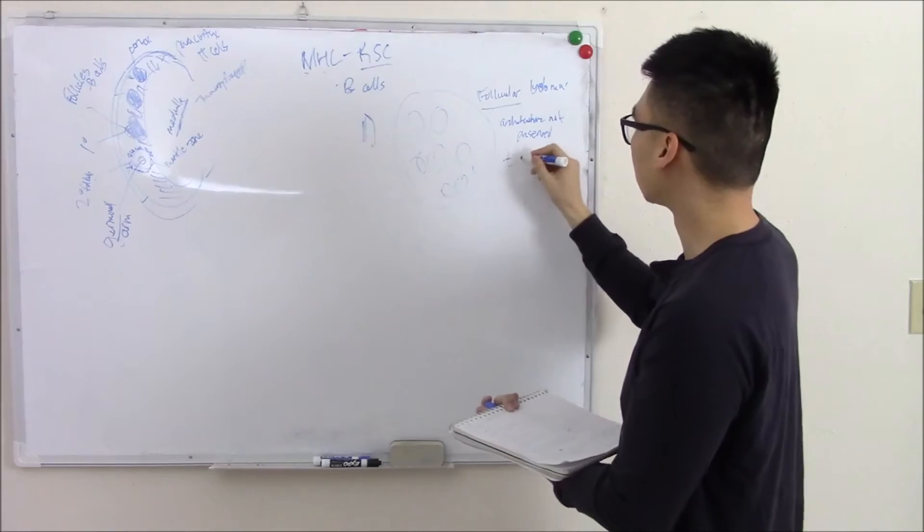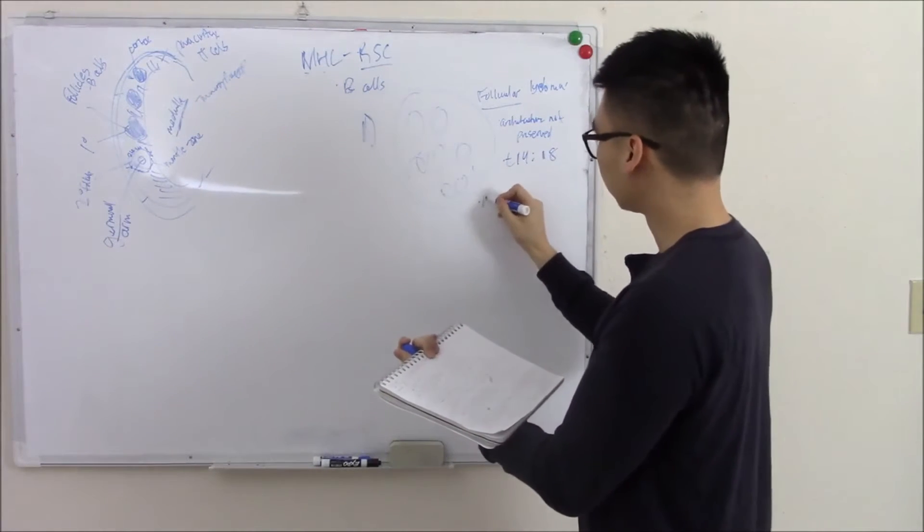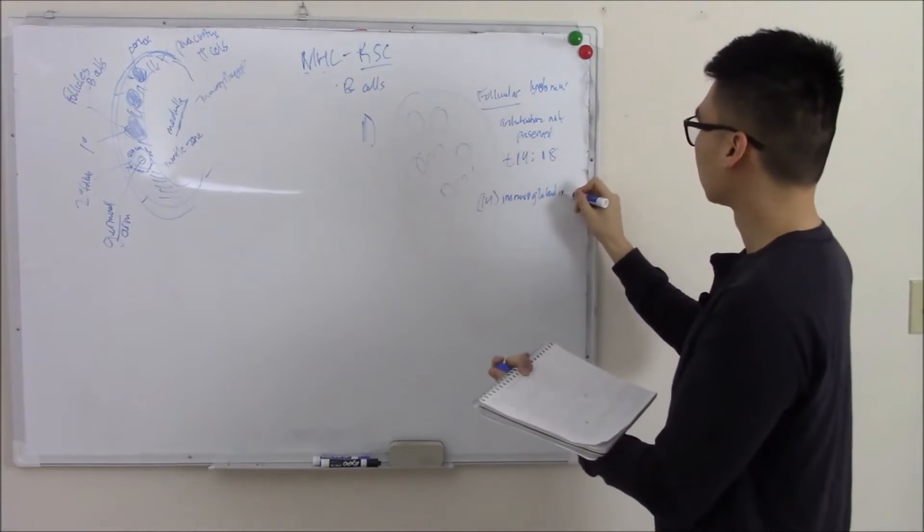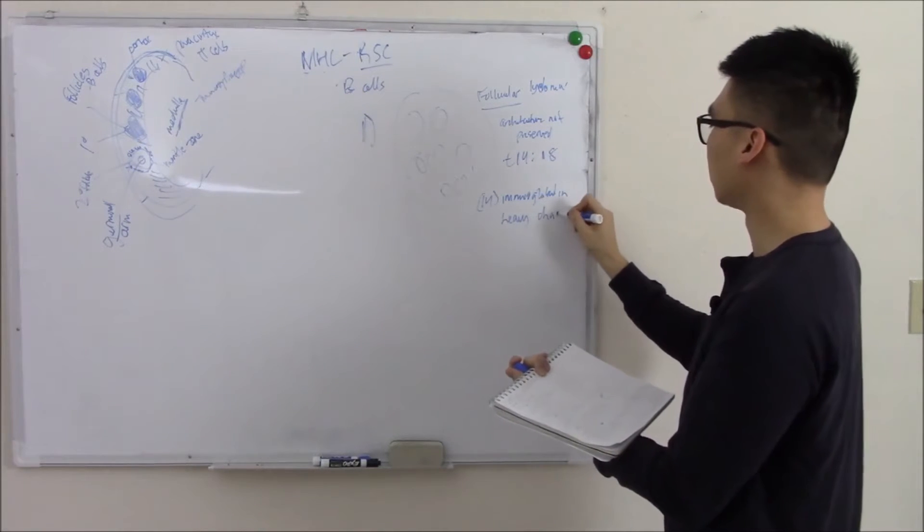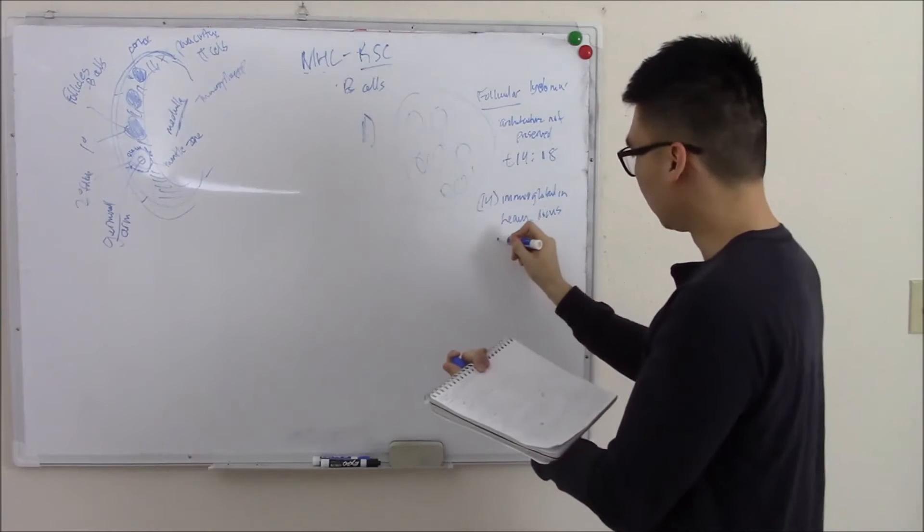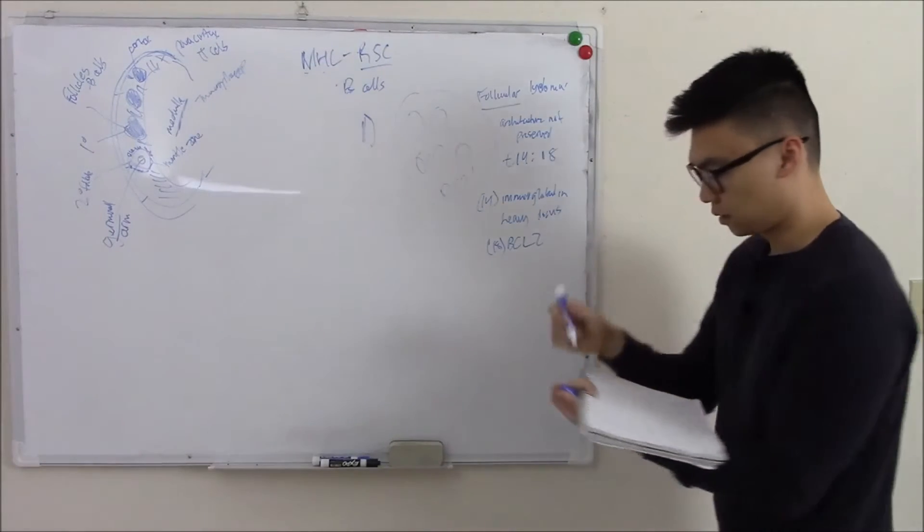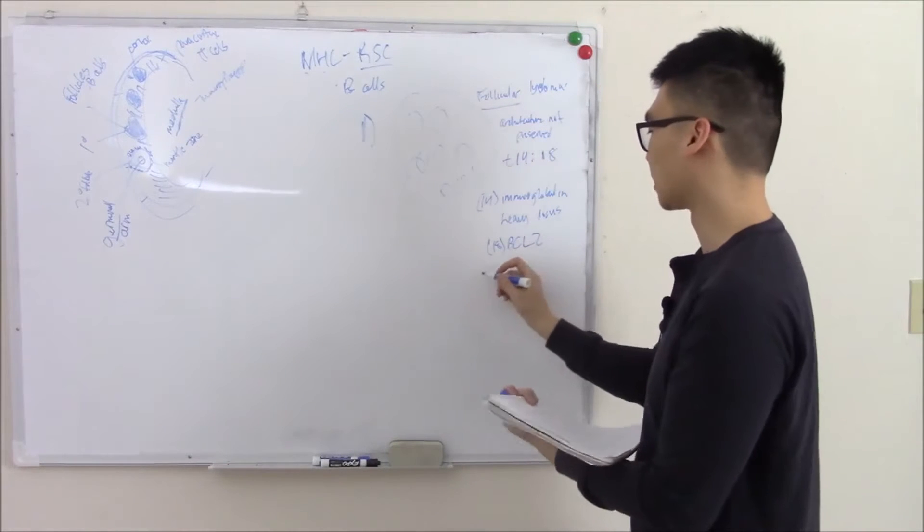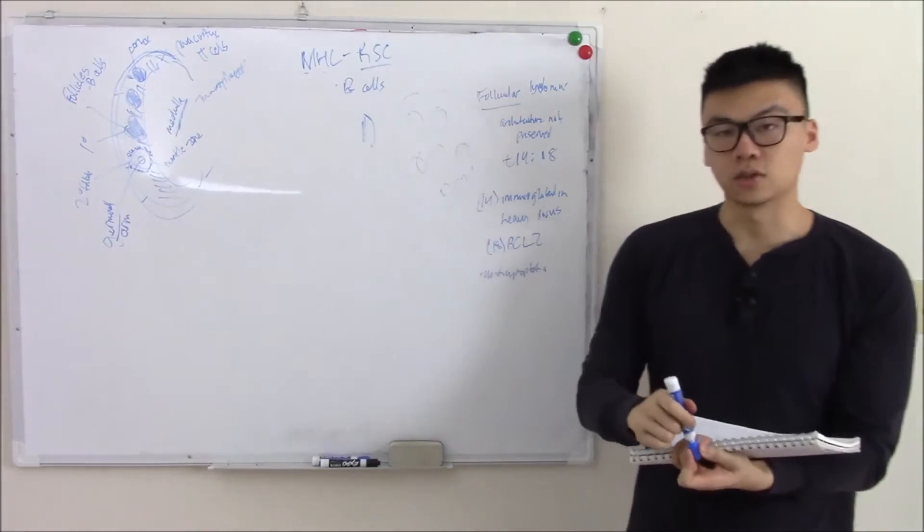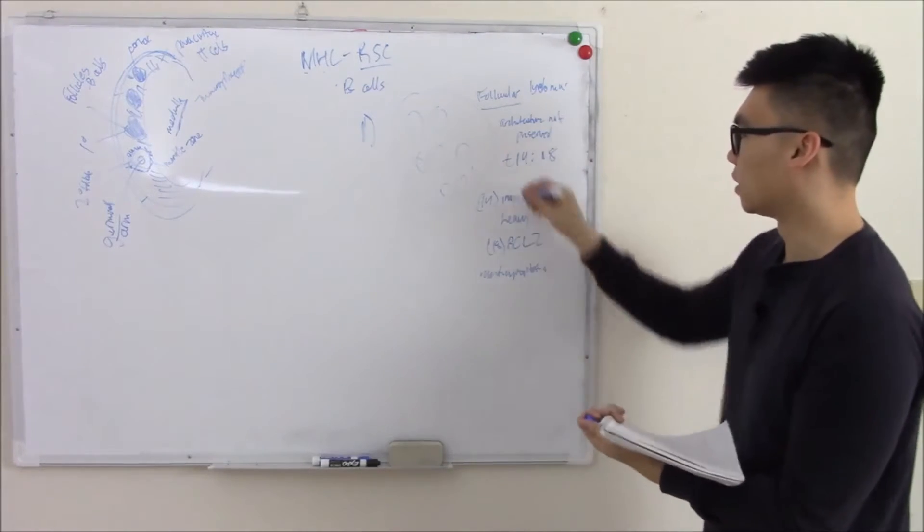One of the most important things is to know it's highly associated with a translocation in 14 and 18. Chromosome 14 carries your immunoglobulin heavy locus, a gene that controls the production of your heavy chains. You translocate that onto chromosome 18, which contains your BCL-2 locus. This controls BCL-2, which is anti-apoptotic. Anti-apoptotic, meaning you just keep proliferating. Your cells don't die. They're basically immortal. And that's what causes follicular lymphoma.